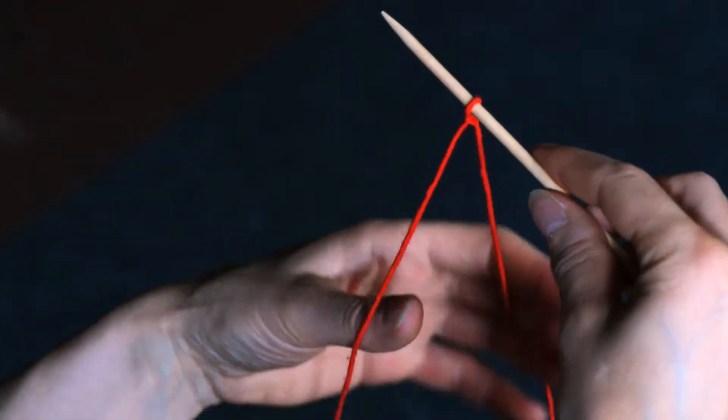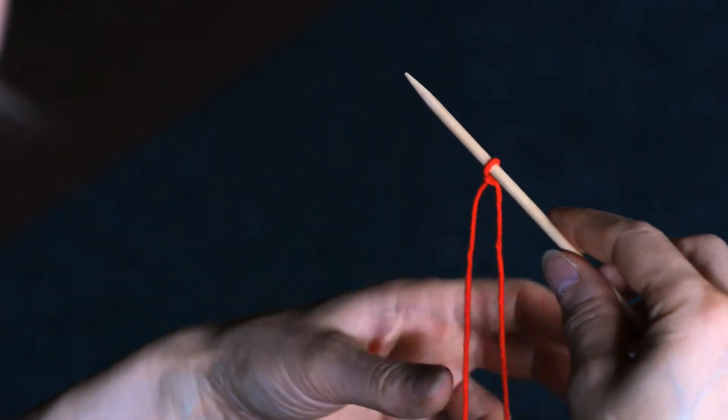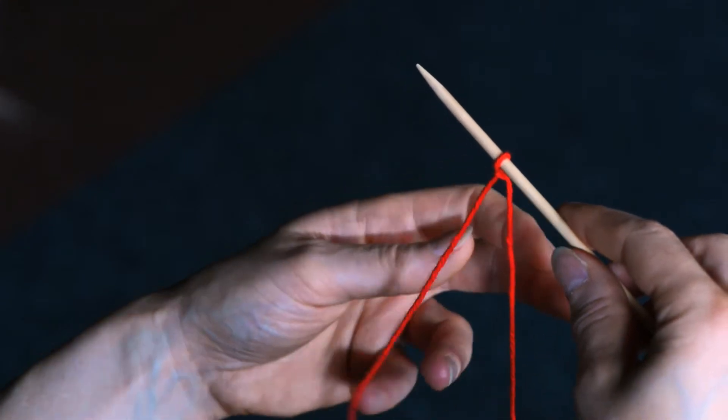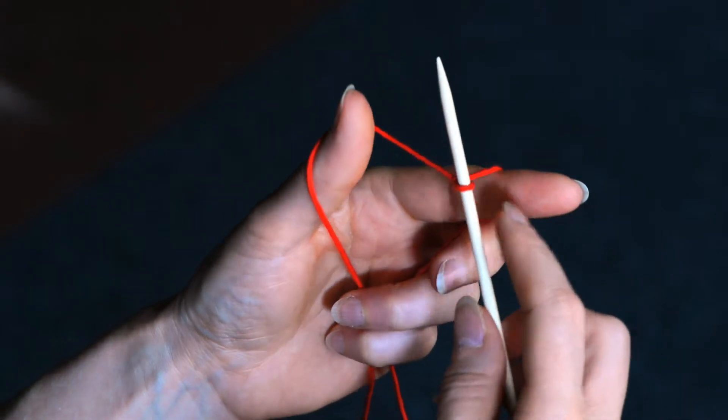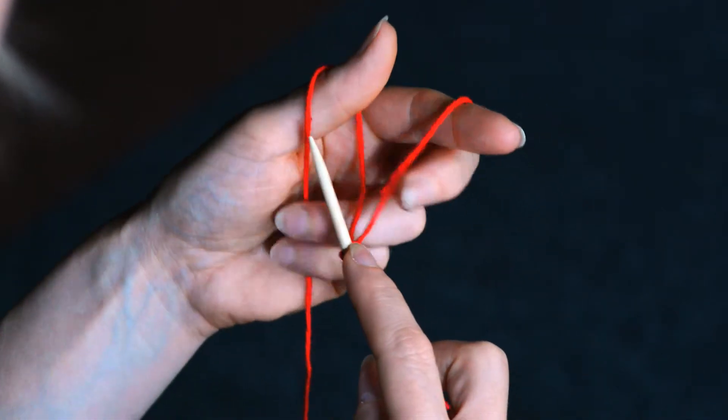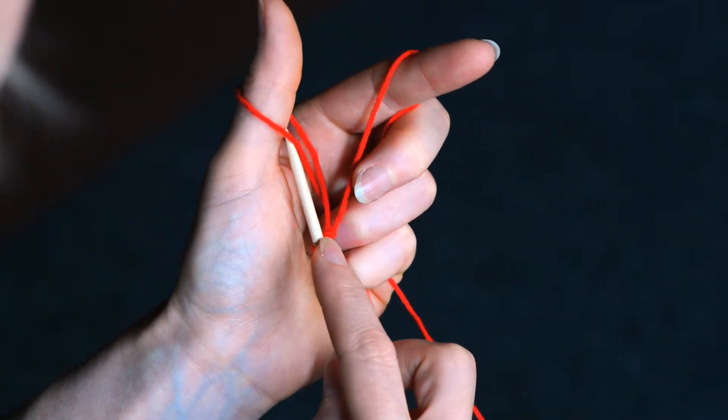Let the two ends of yarn hang down, put your thumb and first finger through the strands, and pull your needle down to create tension. Do a figure of eight.